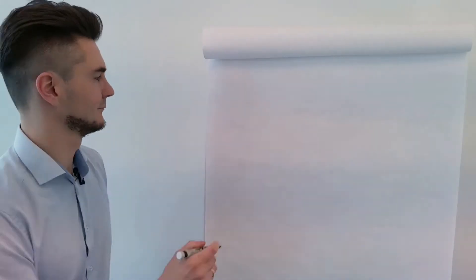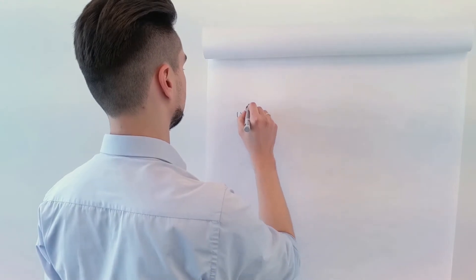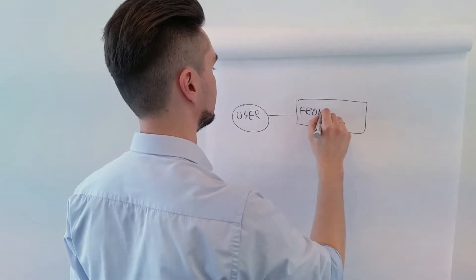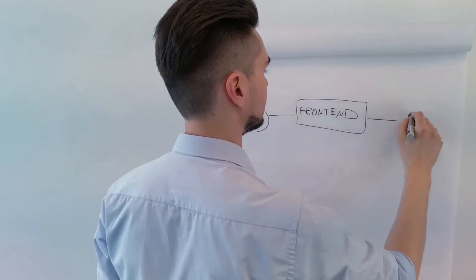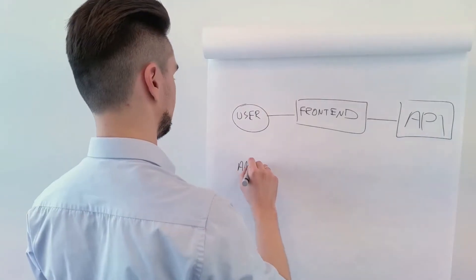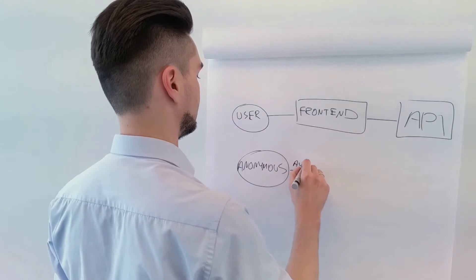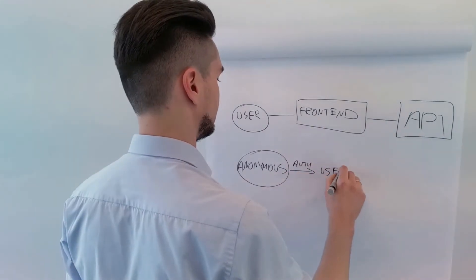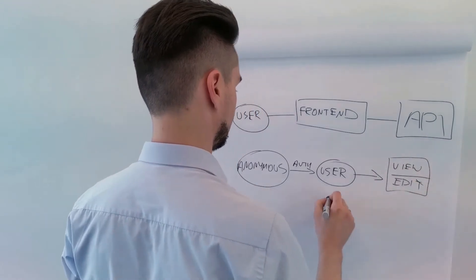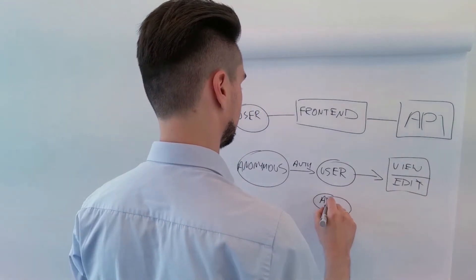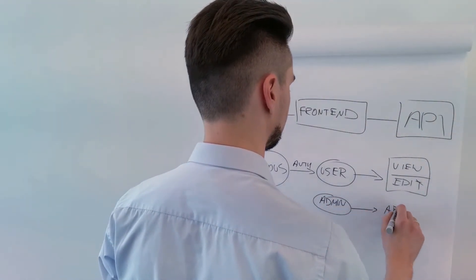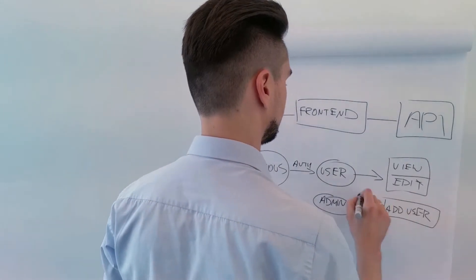Let's imagine a typical infrastructure look at an API. There is a user who uses the front-end application that consumes the API. A typical use case is that an anonymous user authenticates to a system and later on they can view and edit data. Sometimes there is a separate API for back-office admins, or administrative methods in the main API.